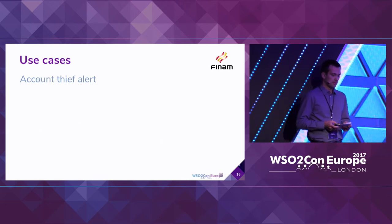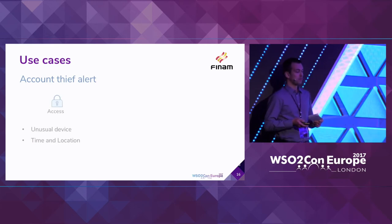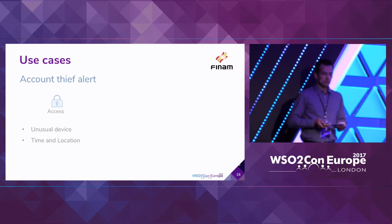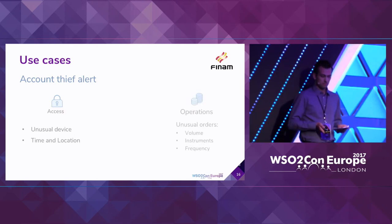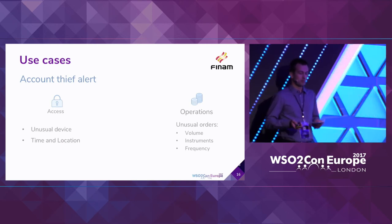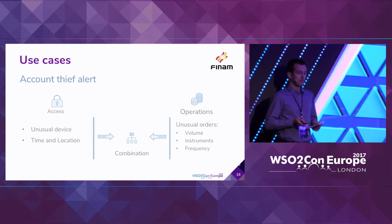The next case: CEP can detect a connection from an unusual device, or from an unusual time or location. CEP can also detect unusual other properties such as an unusually large volume of trade operations or unusual instruments. And when CEP detects both, it generates an alert for operators.